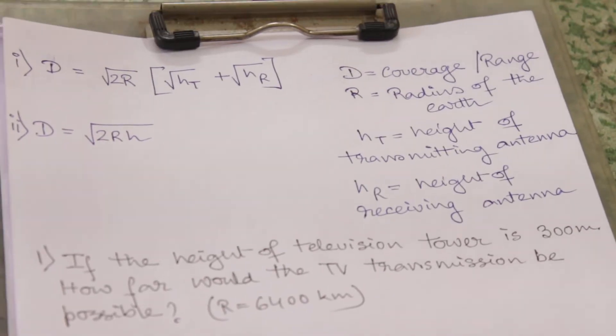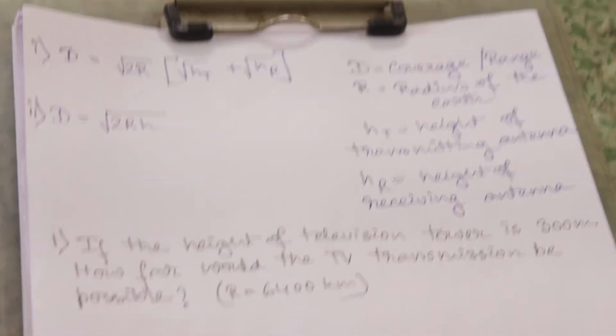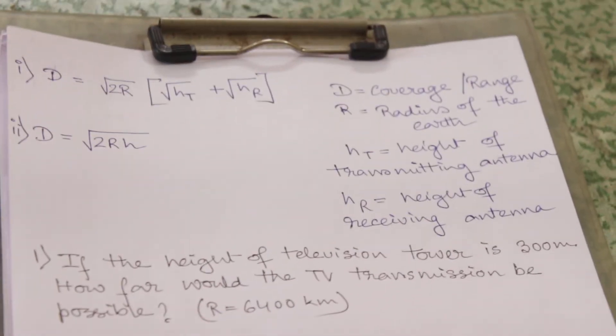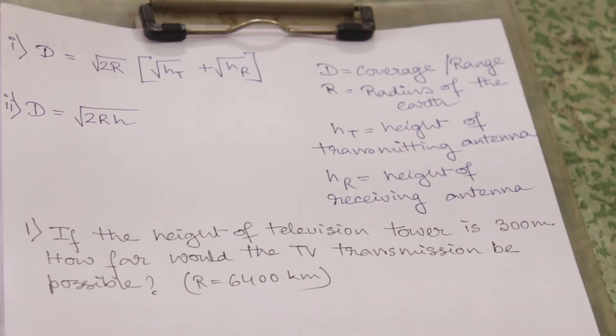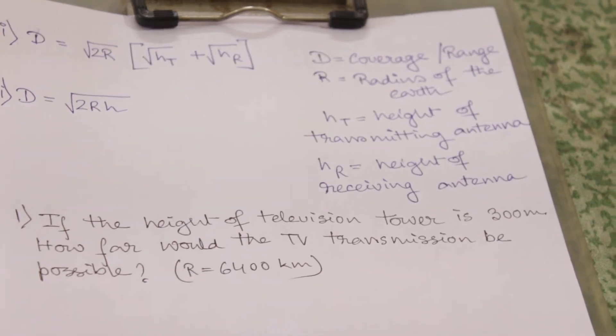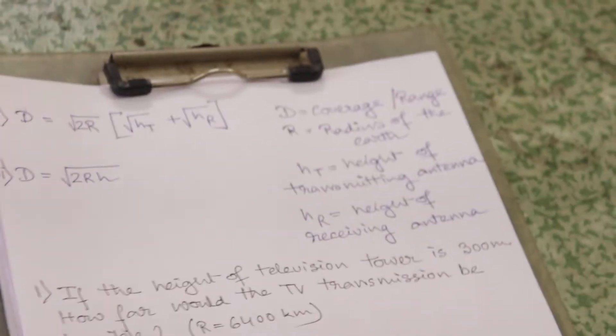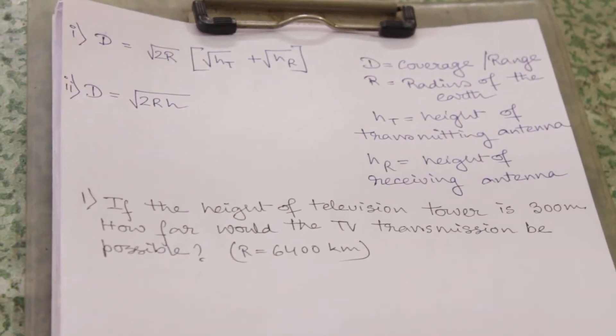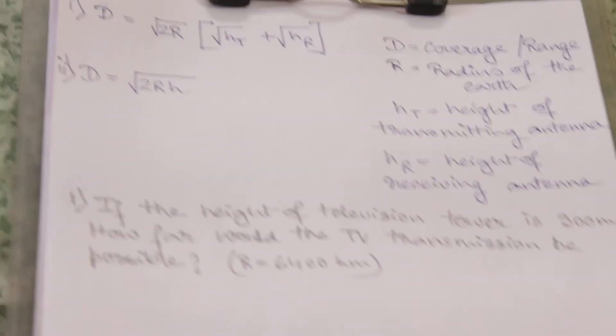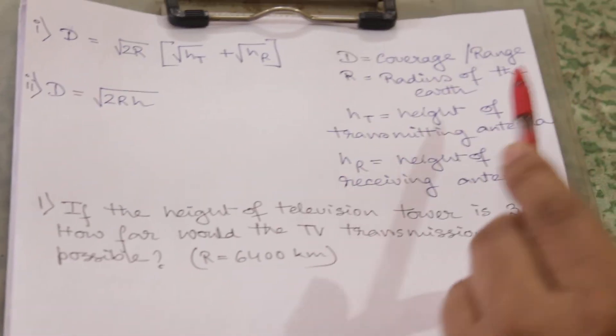Hey guys, welcome to our channel Learn To Me. Today we will discuss about the height of antenna and range of the signal in communication systems. So let's start. There are two equations where D is the coverage or range of that signal.